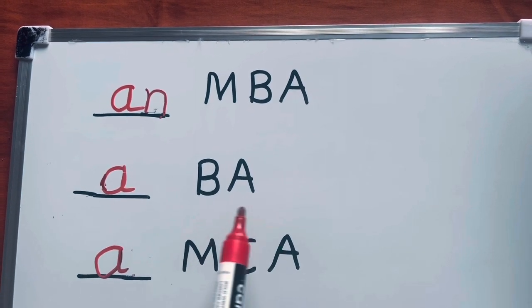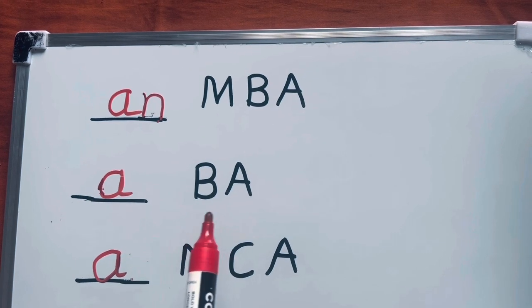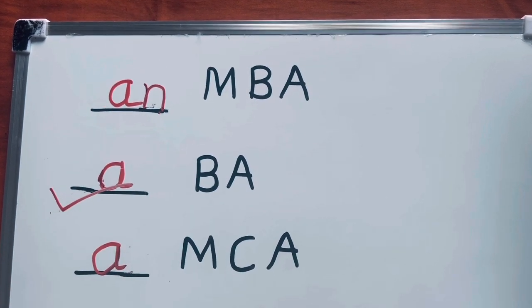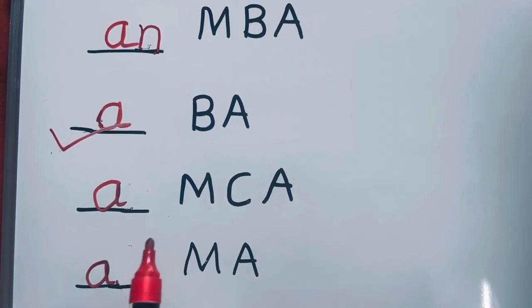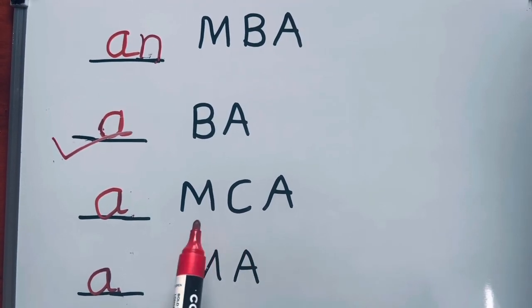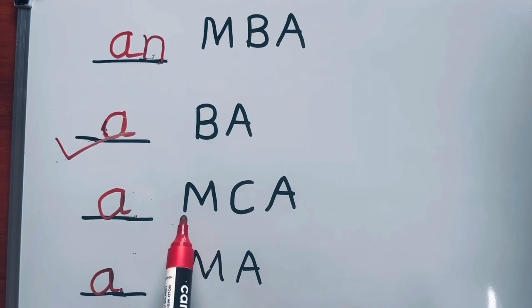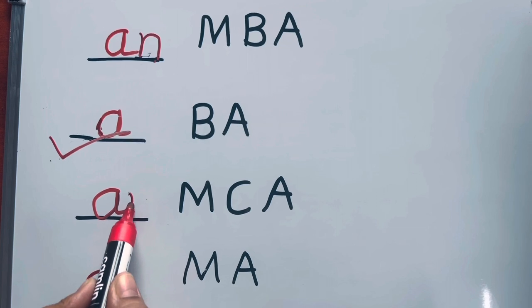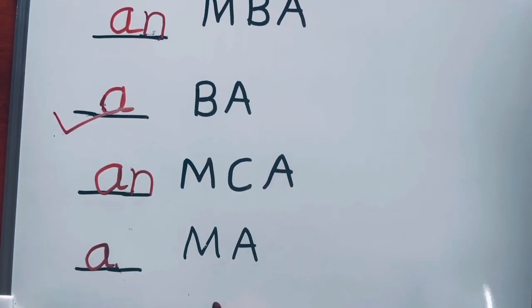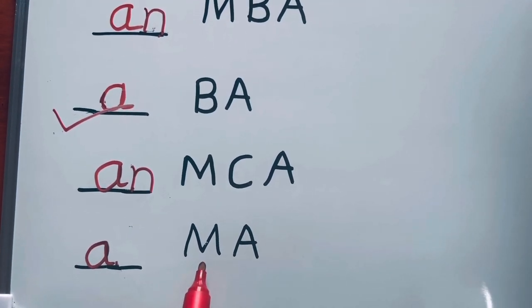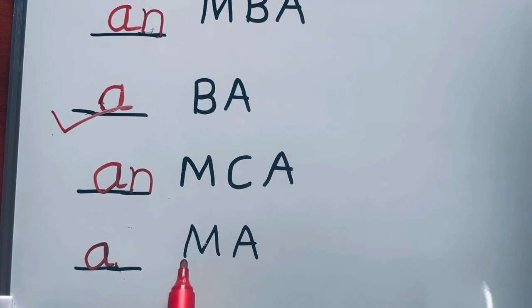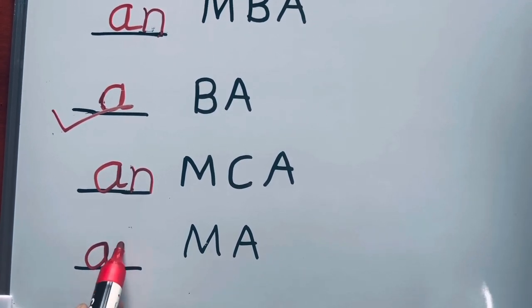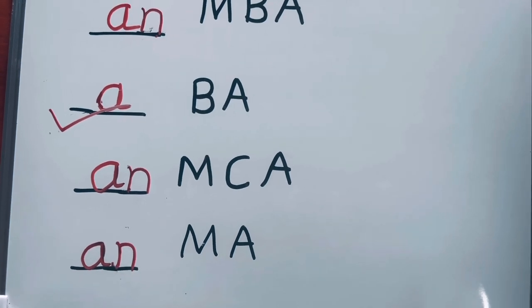BA - B is pronounced as 'bee', and B is a consonant, so a BA. Now we have MCA, a name of degree. M is pronounced as 'em', and em starts with a vowel sound, so an MCA. MA - M is pronounced as 'em', which starts with a vowel sound, so it's an MA.